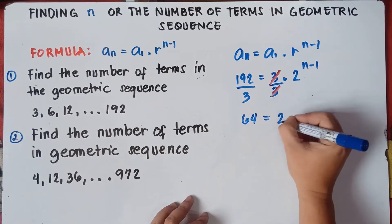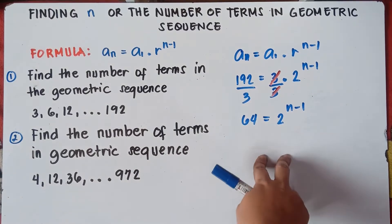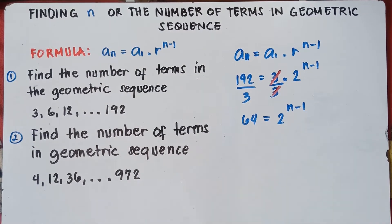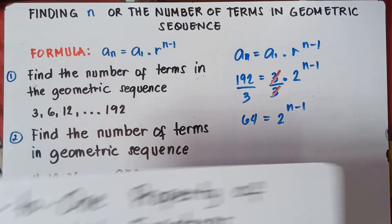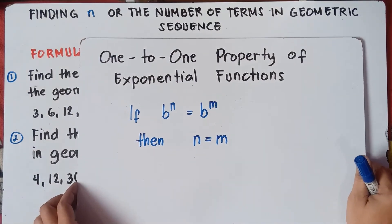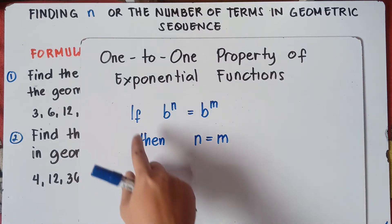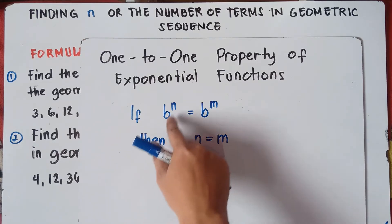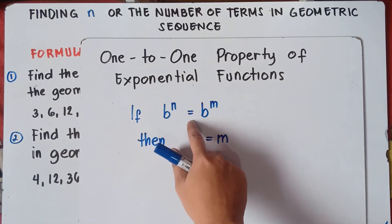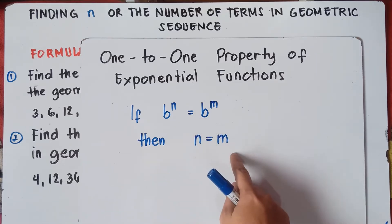So 64 equals 2 raised to the power of n minus 1. Now in this scenario, we will be applying the 1-to-1 property of exponential functions. This property states: if b raised to the power of n equals b raised to the power of m, then n equals m.